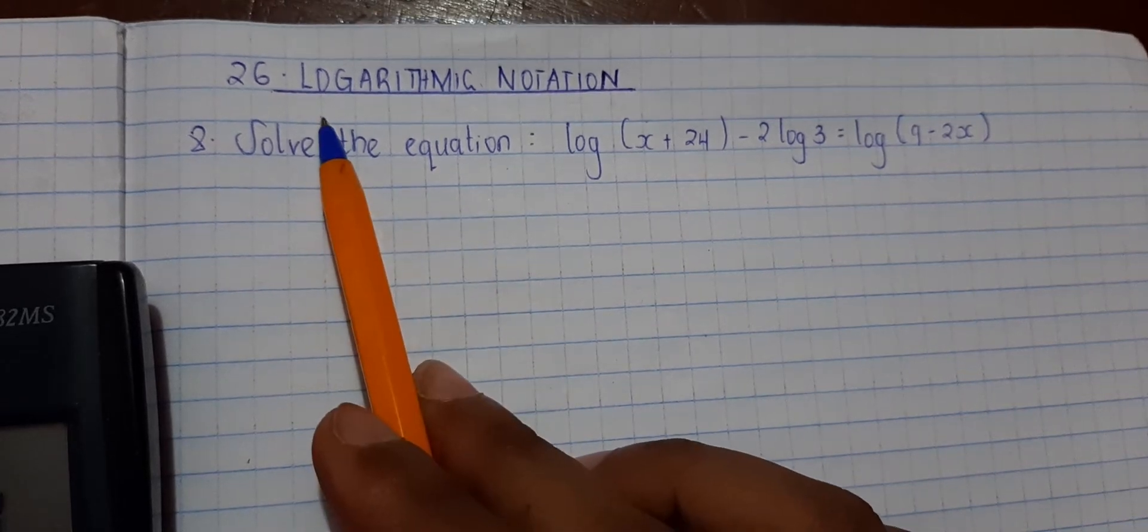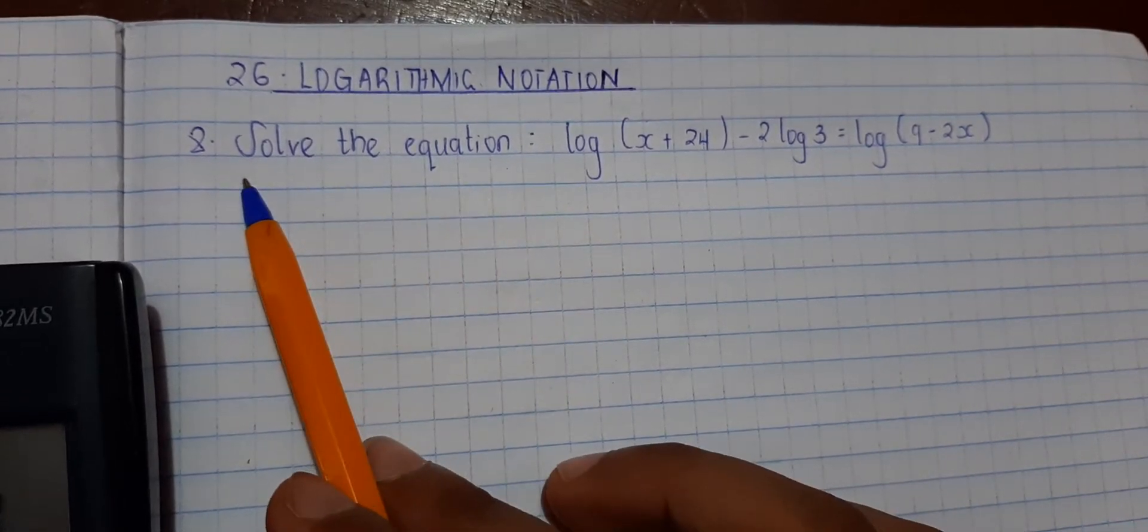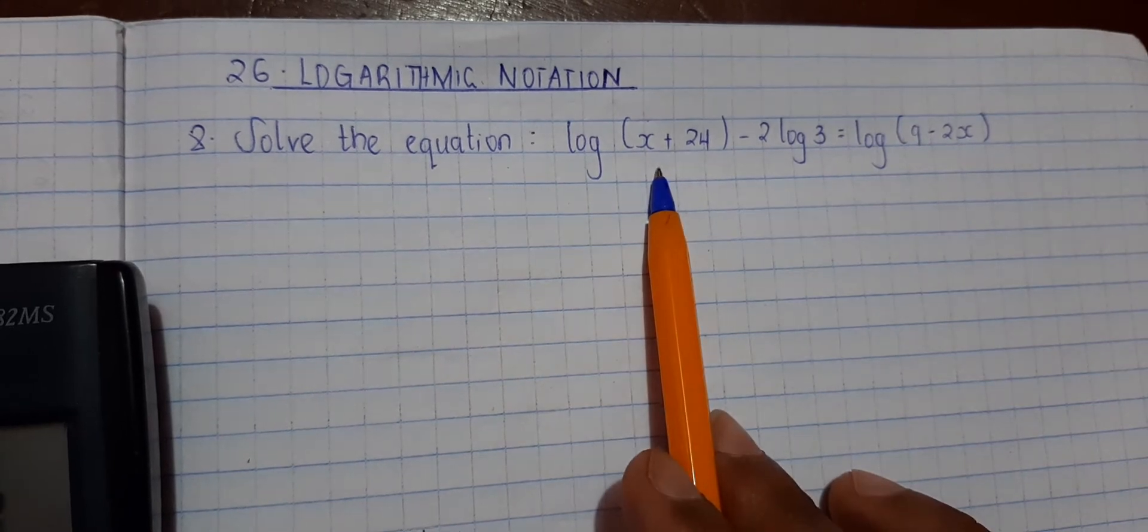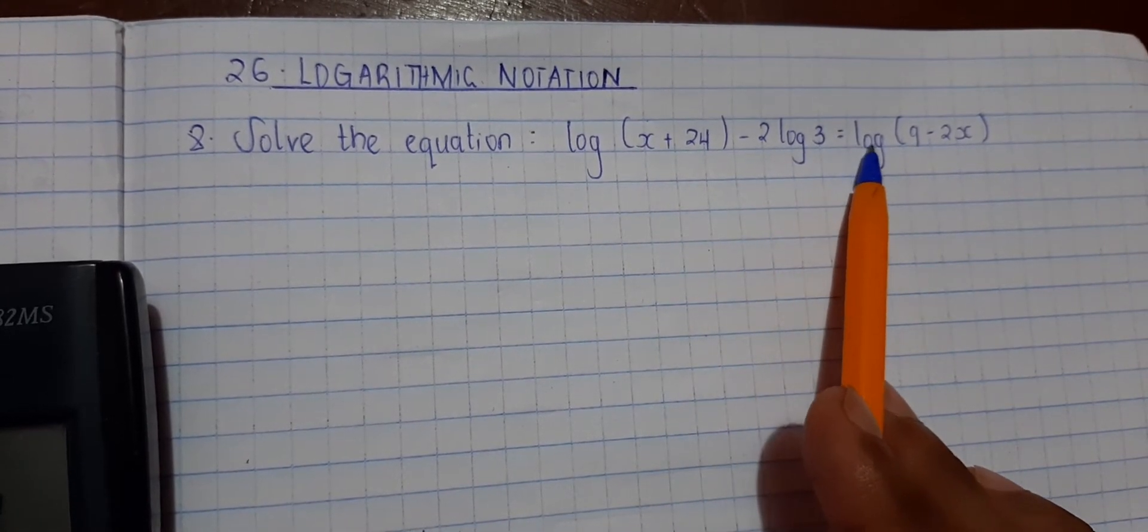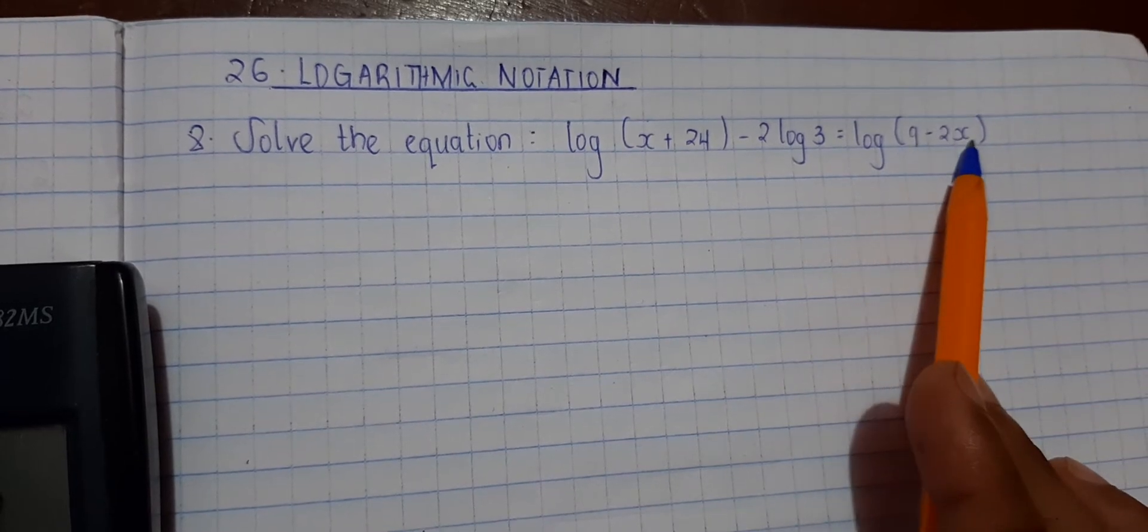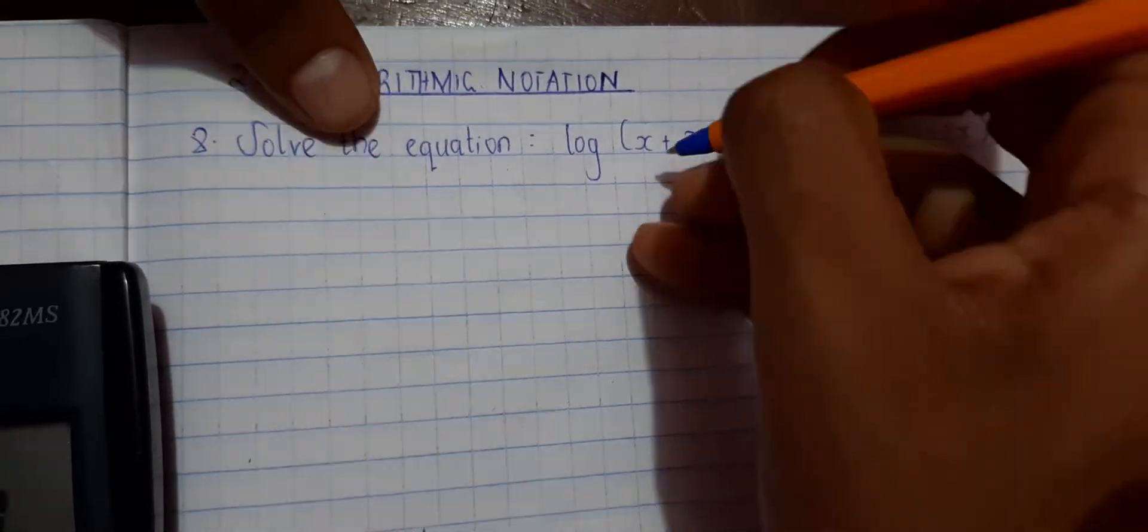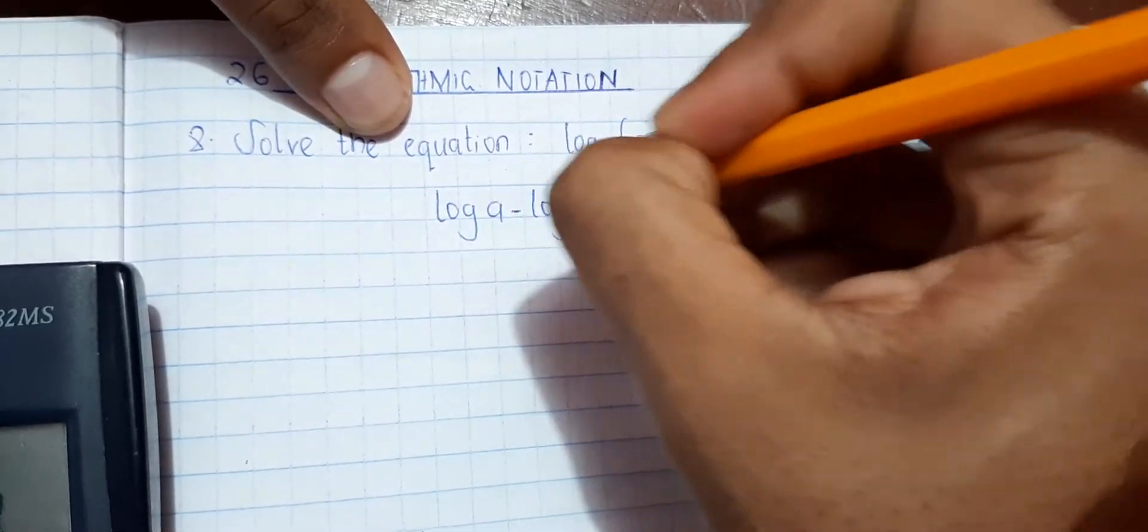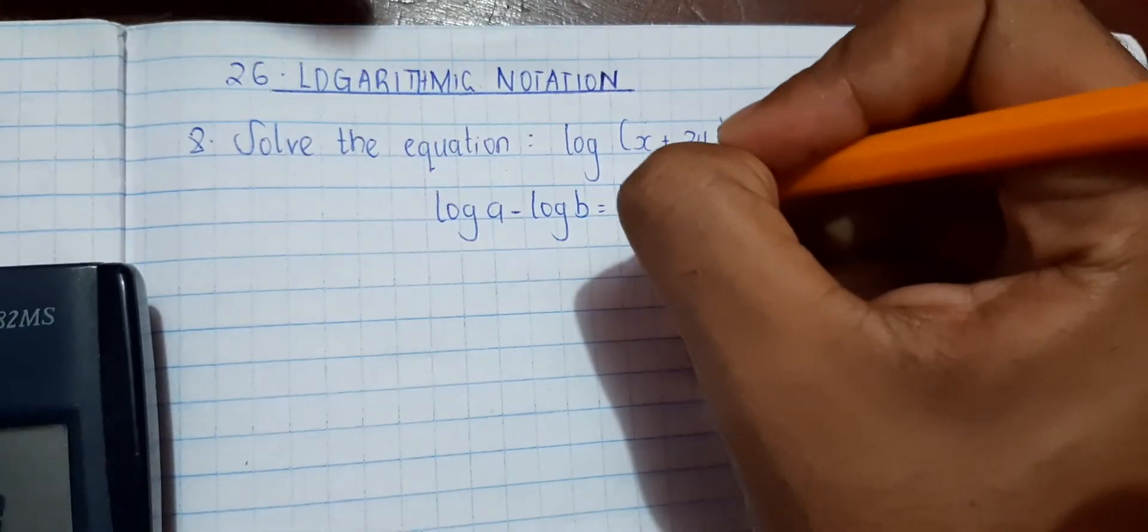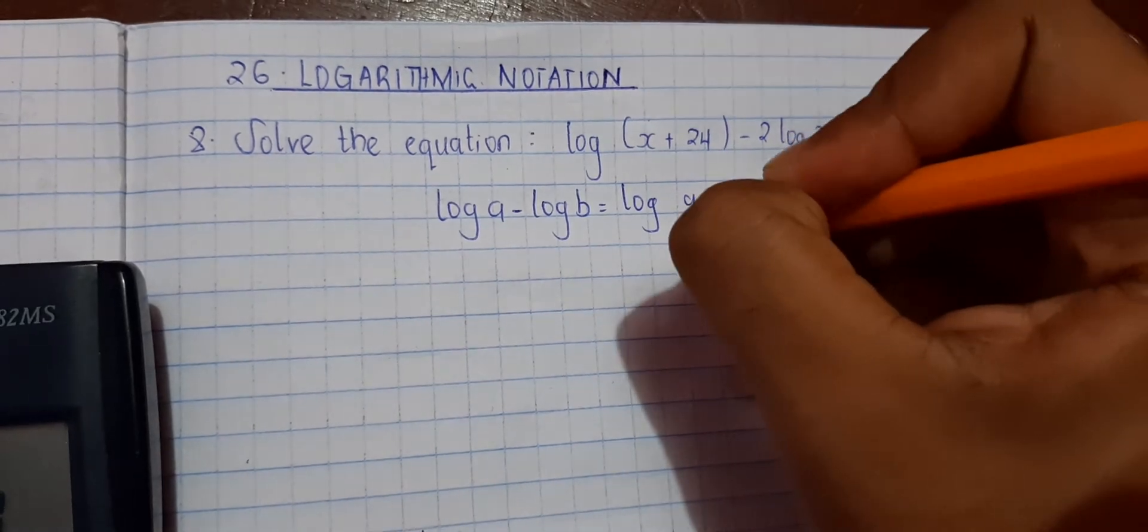Topic 26 logarithmic notation question 8. Solve the equation log(x + 24) minus 2 log 3 is equals to log(9 minus 2x). As we know, log a minus log b is equals to log a over b.